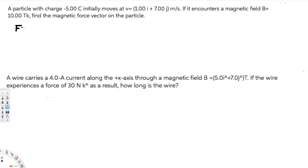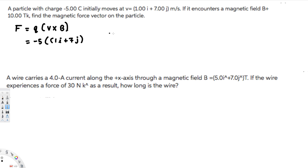For magnetic force, the equation is: F = q(v × B). We know the charge is negative 5 coulombs, so this is going to be negative 5 times the velocity, which is 1 in the i direction plus 7 in the j direction, and then we cross that with the magnetic field, 10 tesla in the k direction.